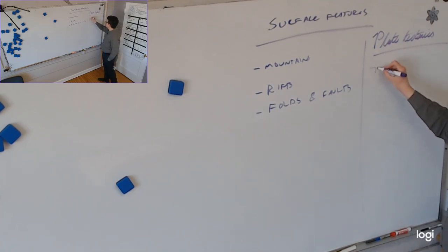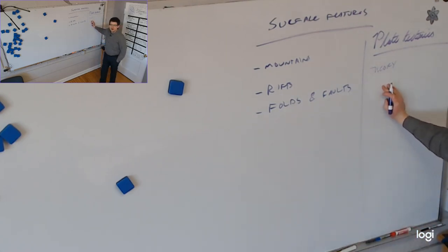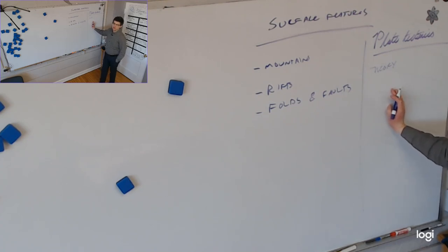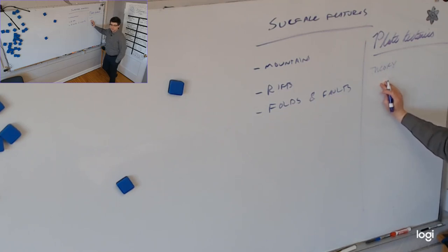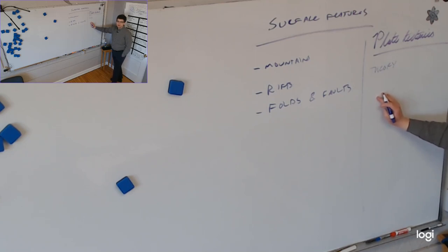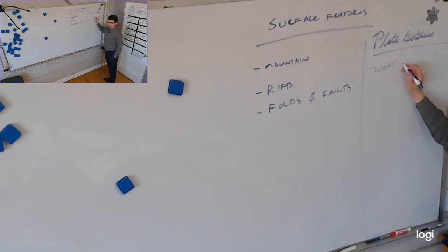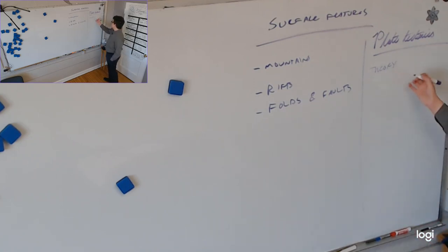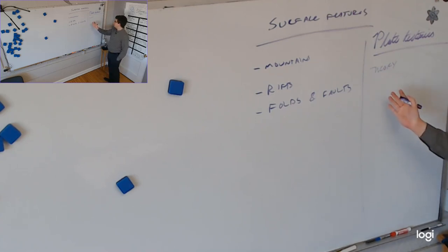Plate tectonics is a theory. Remind me what a theory is, because we've talked about this before. If I say 'I have a theory it'll rain tonight,' I mean guess — maybe hypothesis. But a scientific theory is an idea that started out as a hypothesis and then accumulated a preponderance of evidence. All the evidence that exists fits into this theory, and if new evidence doesn't fit, we change the theory. It's the best explanation we have, backed up by all the evidence.